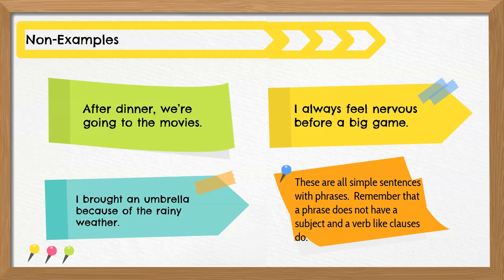Let's try it. Look at the green sticky. Find the AWUBAS word: after. After dinner — nope, no subject and no verb. Now the yellow one. What's the AWUBAS word? Before. What comes next? A big game — nope, no subject, no verb. Now the last one. What's the AWUBAS? Because. Because of the rainy weather. Of the rainy weather does not have a subject or a verb either.